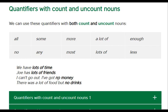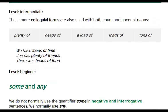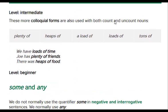'I can't go out — I've got no money.' Money cannot be counted. 'There was a lot of food but no drinks.' Drinks can be counted. These more colloquial forms — colloquial means slang — are also used with both countable and uncountable nouns: plenty of, heaps of, a load of, loads of, tons of. 'We have loads of time.' 'Joey has plenty of friends.' 'There was heaps of food.'